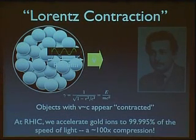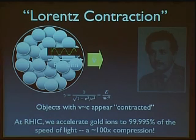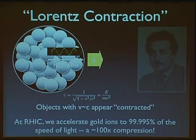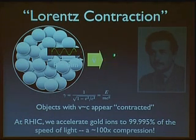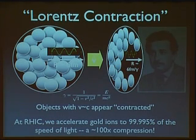The collisions are really occurring very, very near the speed of light. An interesting thing occurs when an object gets accelerated near the speed of light. Einstein, in fact, taught us in 1905 that if you take any object — here's a gold nucleus which has a radius of about 6 femtometers — and if you accelerate it at a particular velocity, you can construct this quantity called gamma, which is the Lorentz gamma factor.